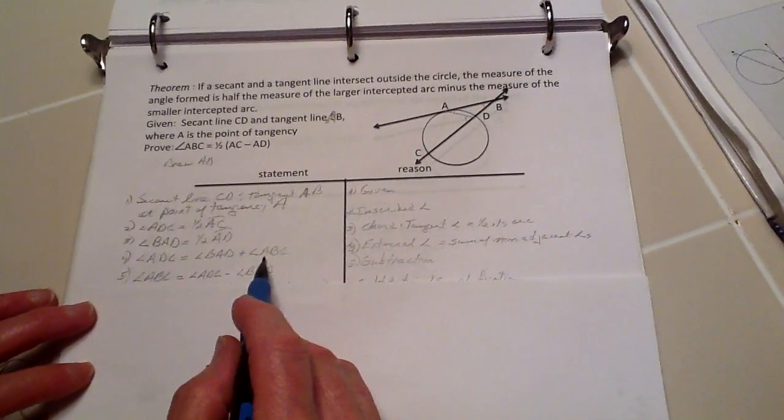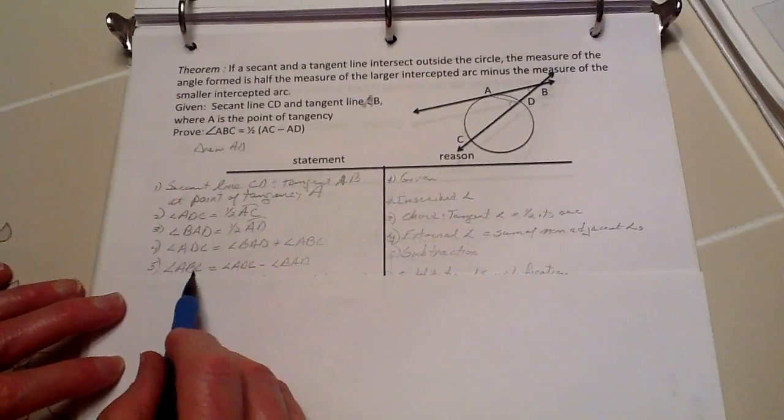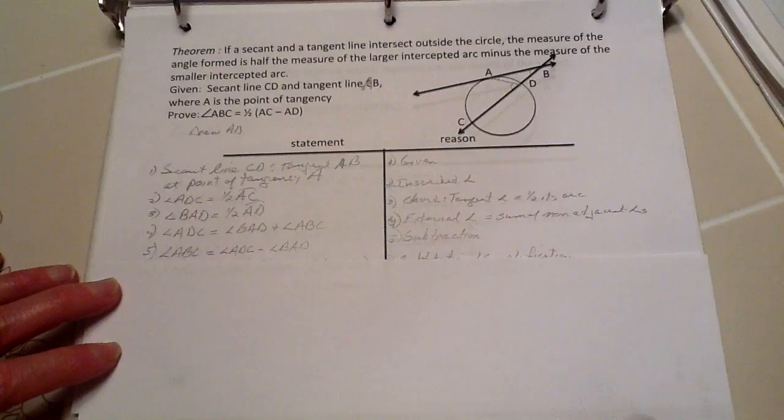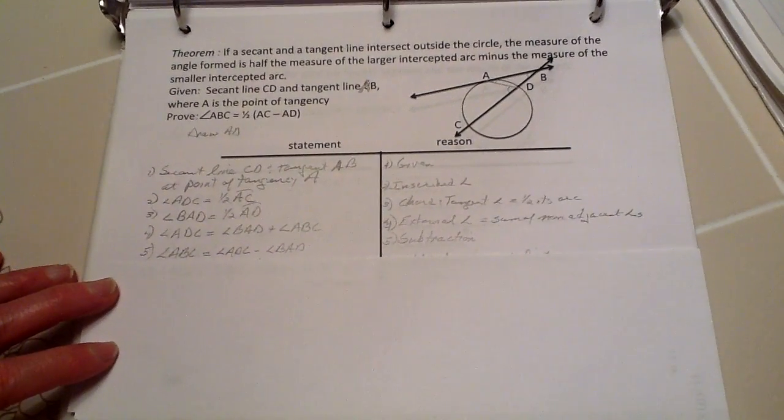Now, if I reverse here and solve for angle ABC, and then by reshuffling these using algebra and subtraction, we come up with this.